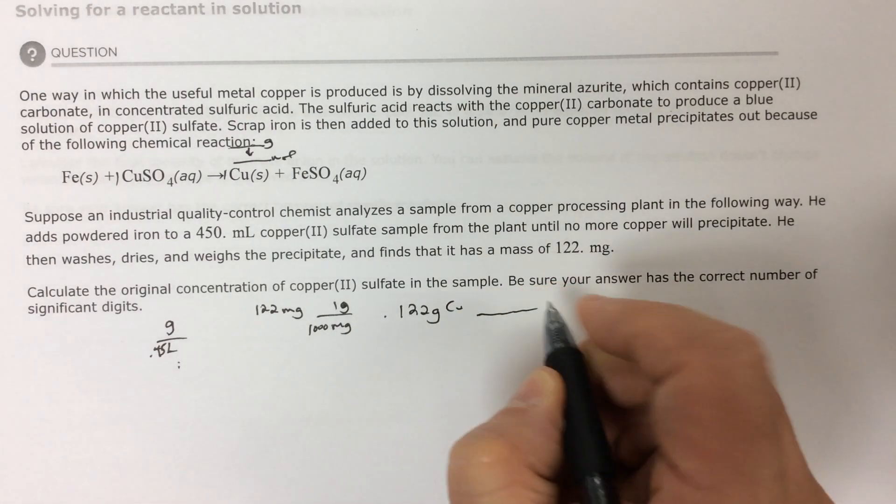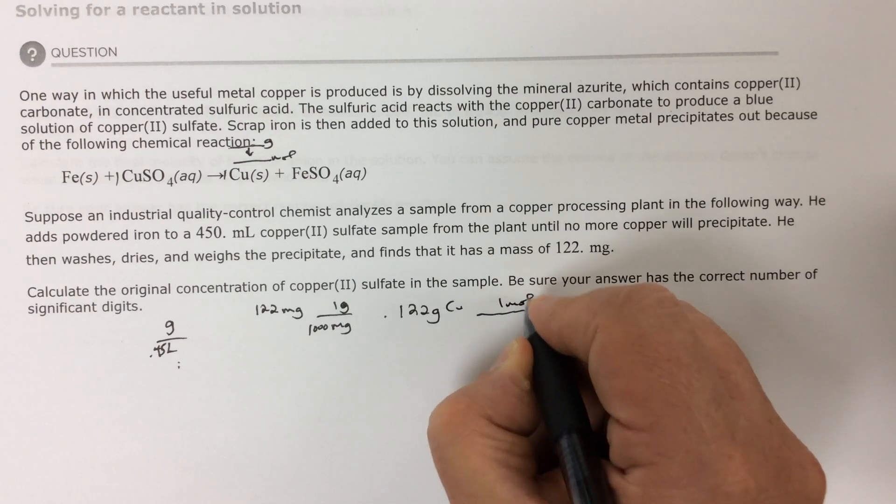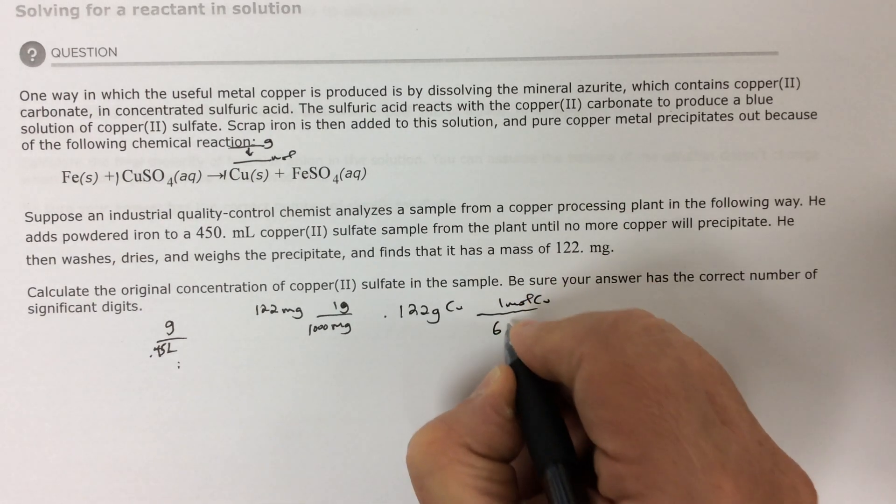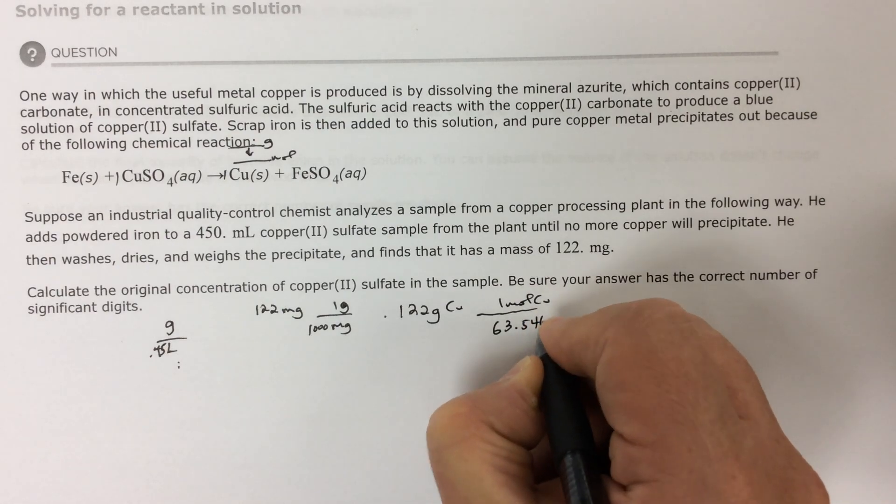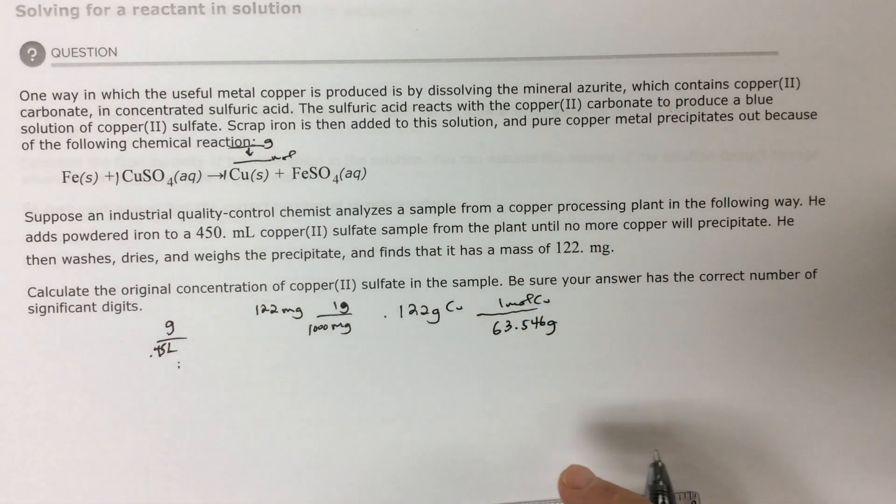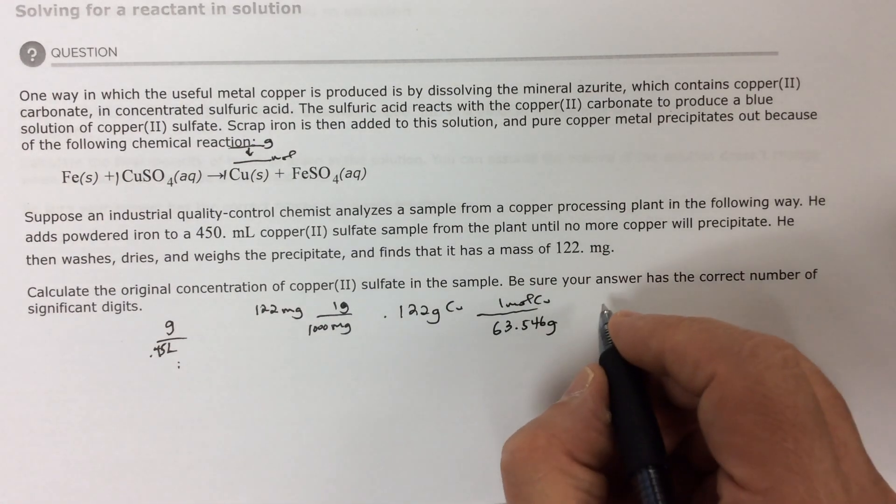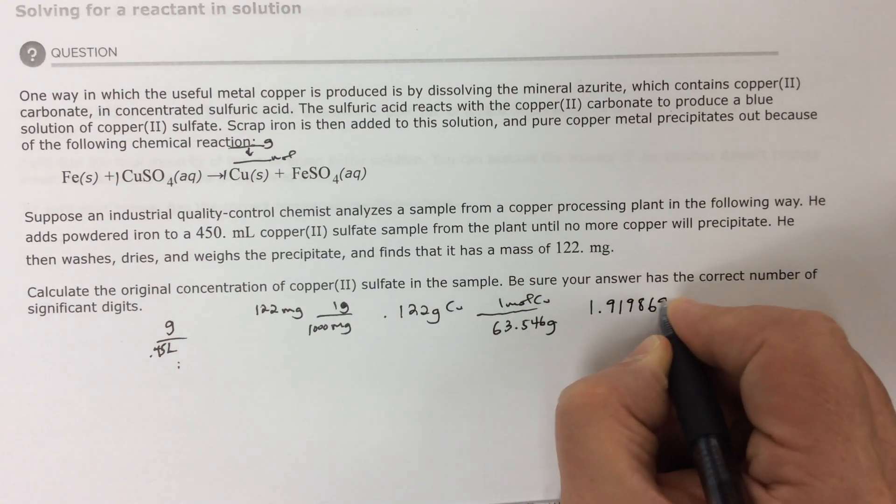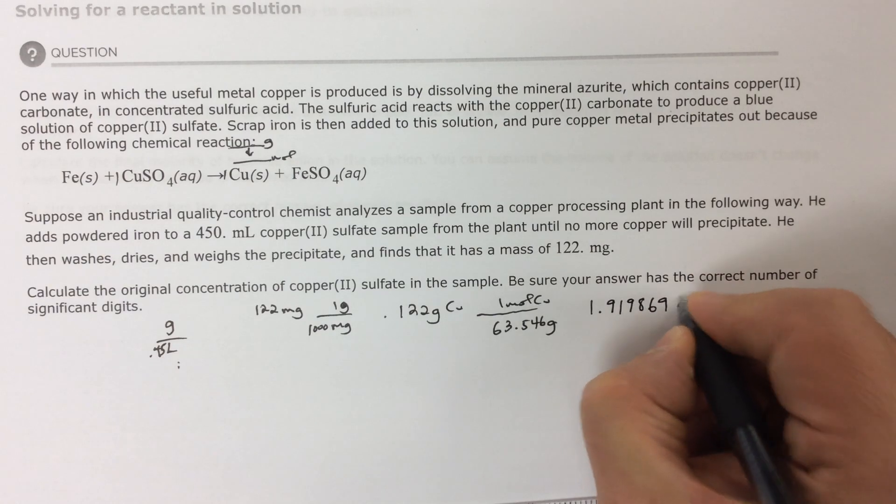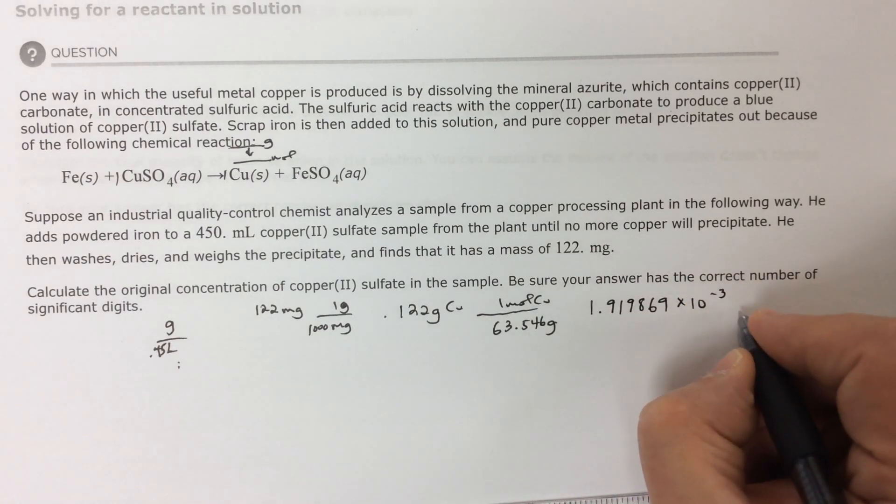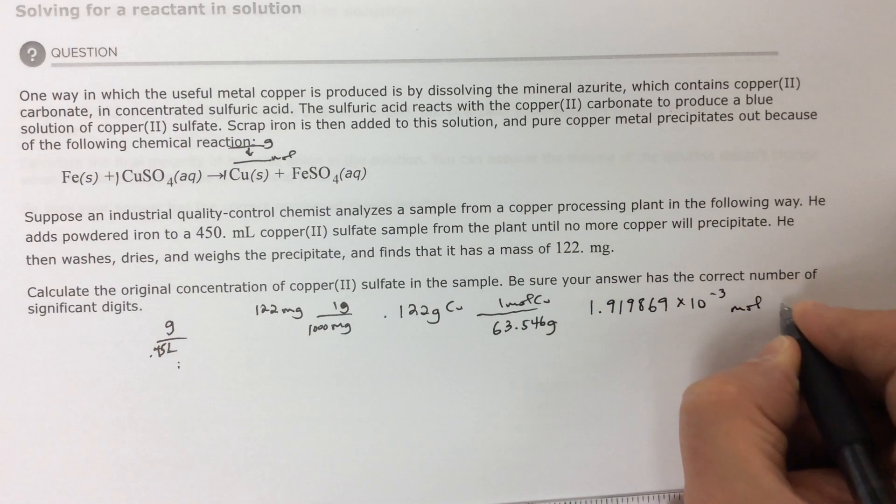And when I go through the periodic table, I find out that in one mole of copper, I have 63.546 grams of copper. Okay, so I'm starting with what I'm given. I'm starting with copper. So 0.122 divided by 63.546. I'm going to have 1.919869, I'll round all this later, times 10 to the minus third moles of copper.